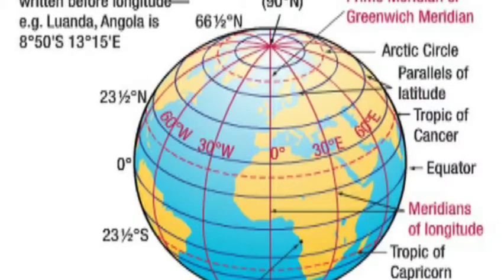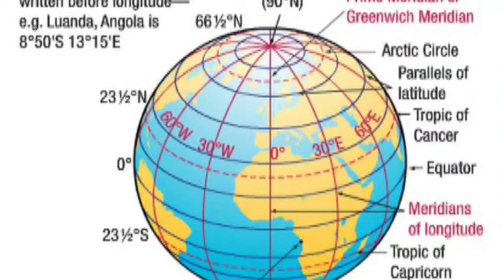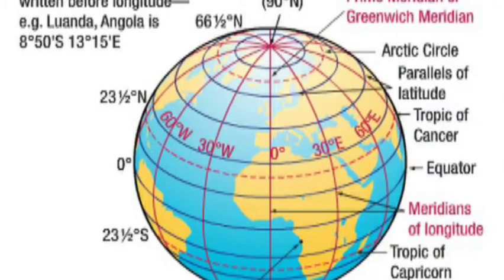Now let's look at the main latitudes. 23 and a half degrees North is called the Tropic of Cancer. It marks the limit of the portion of the Earth where the sun rays fall vertically, especially during June 21st.